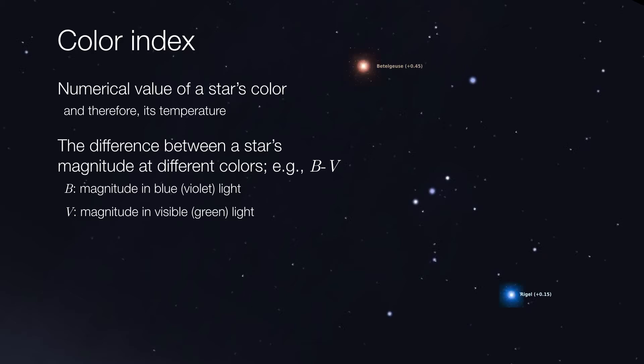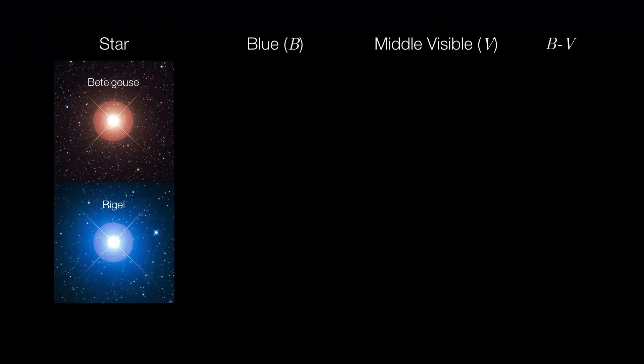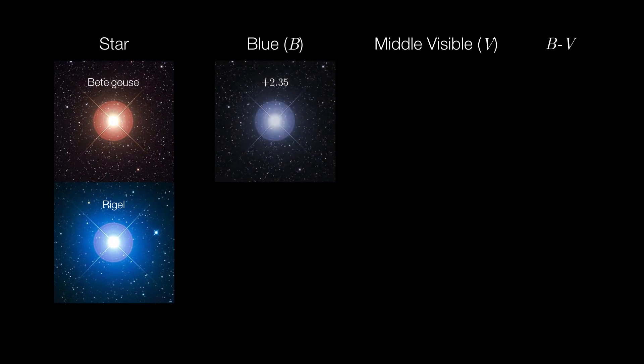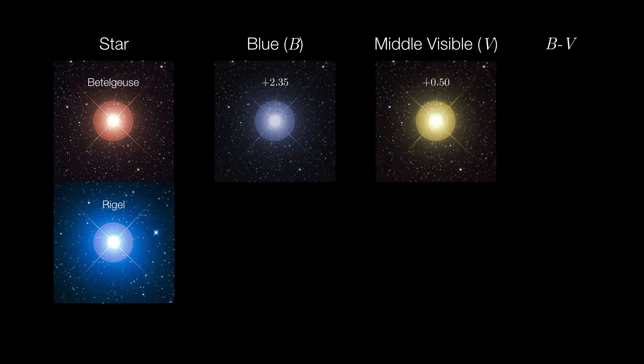So if we take a closer look at these two stars, we can now put some filters in front of them. Let's start with a blue filter. And we find that Betelgeuse has a blue magnitude of about 2.35, and it has a visible magnitude of about 0.5. So we get a difference of plus 1.85.